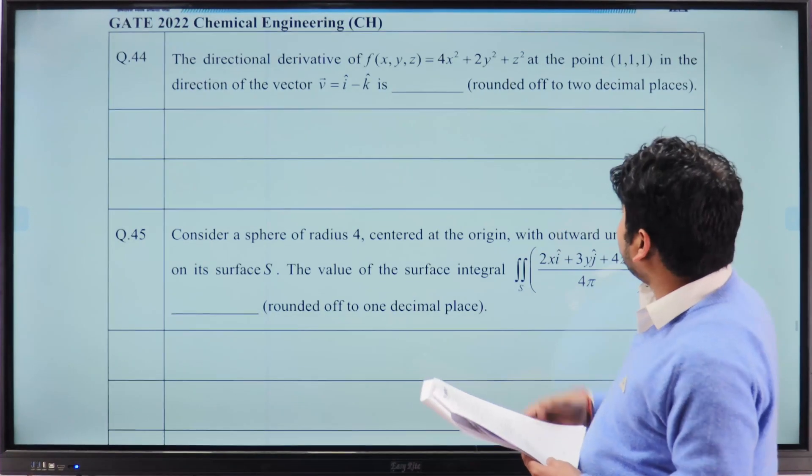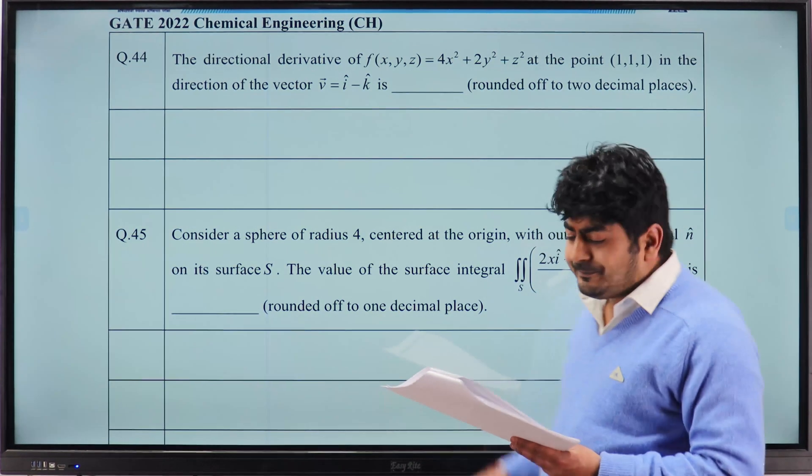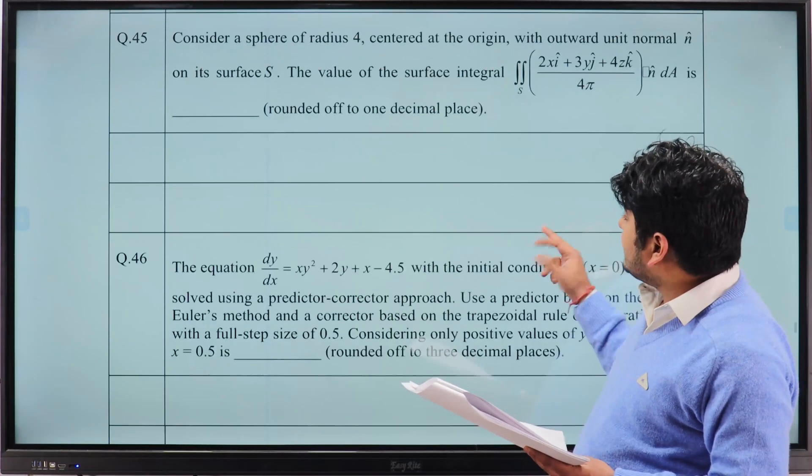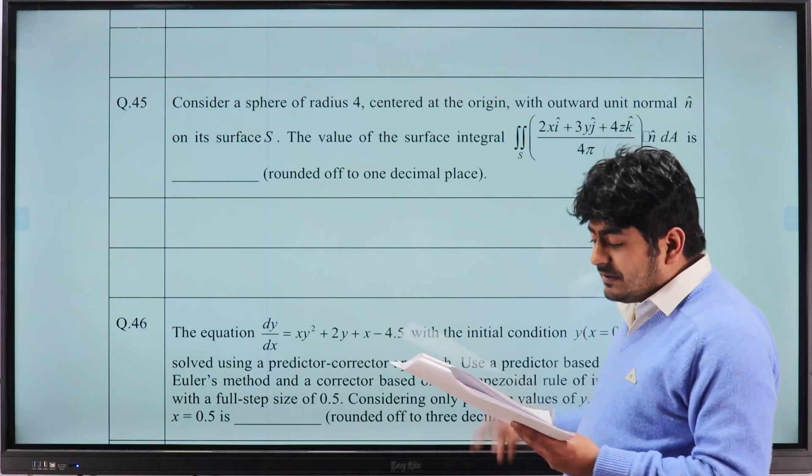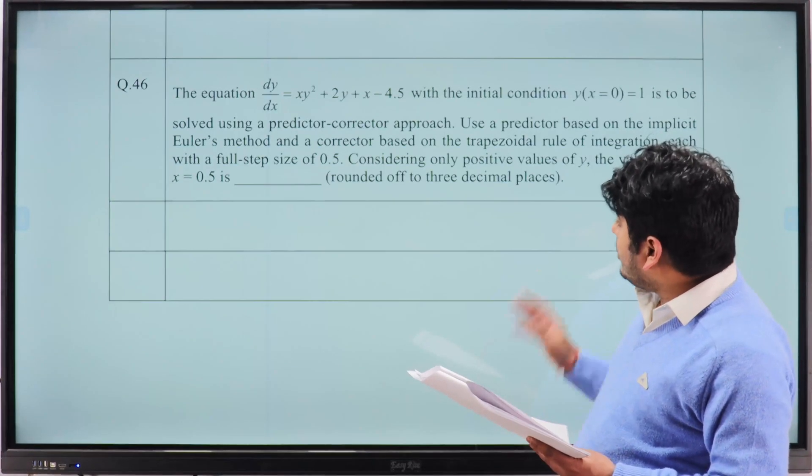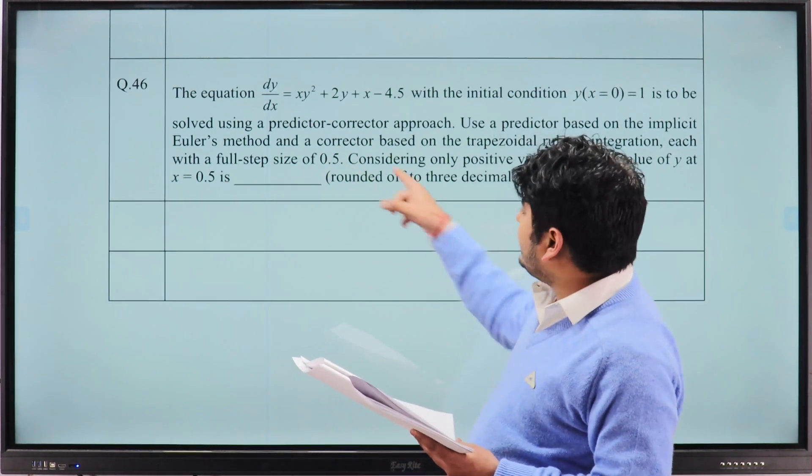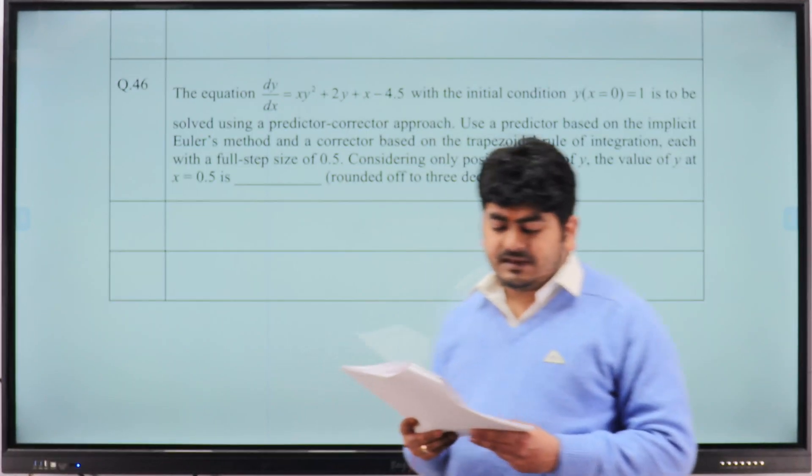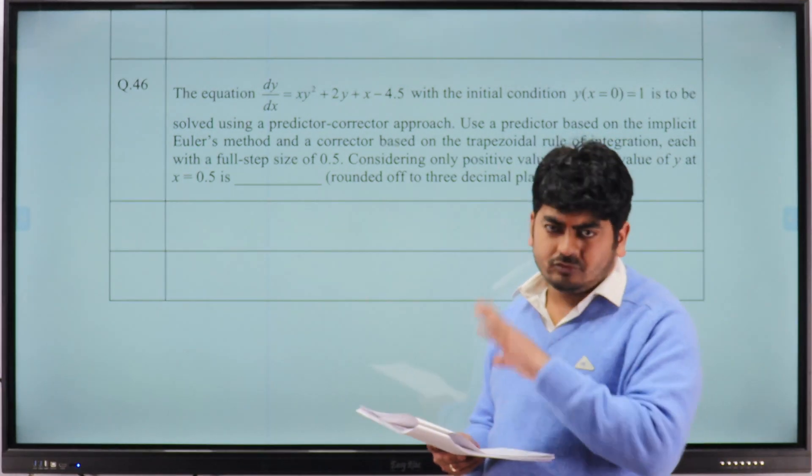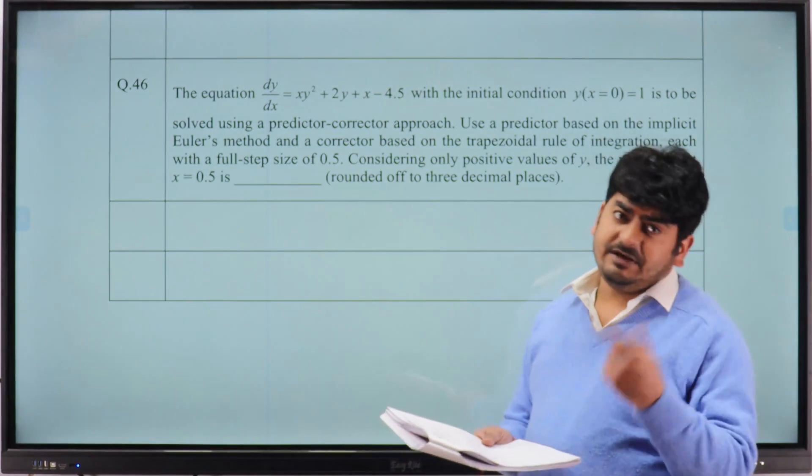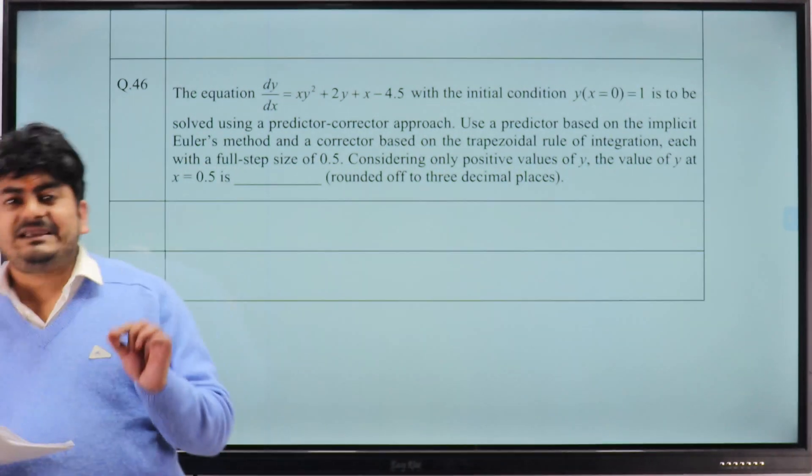Question 44, again from mathematics, vector calculus, 4.24 is the correct answer. Question 45, surface integral question, 192 is the correct answer. And question number 46, according to our faculty here for predictor-corrector method, the correct answer he is getting is minus 0.742. How and why that, you can discuss tomorrow.